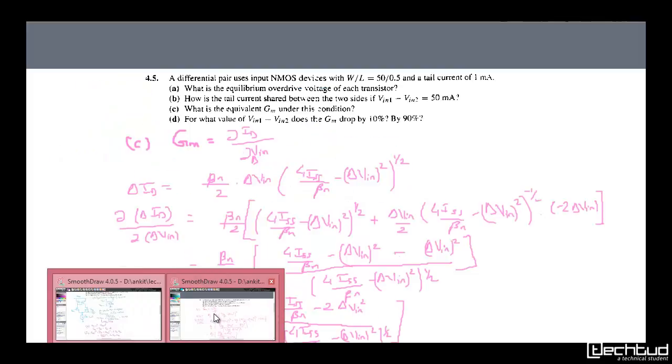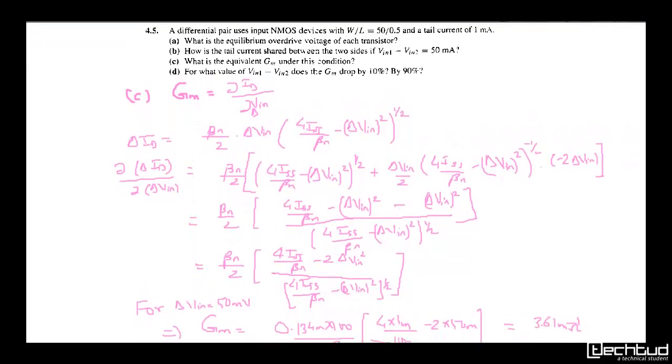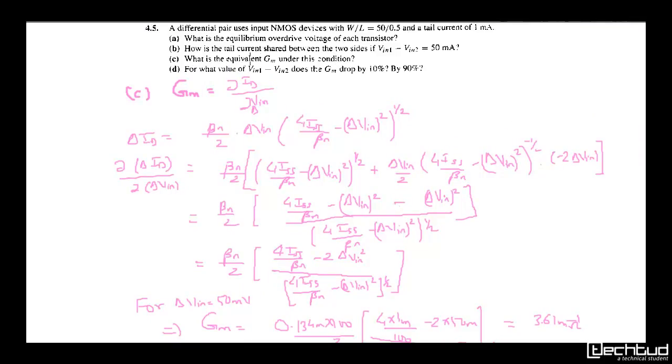Now the third part: What is the equivalent gm under this condition? The definition of transconductance is δID/δVin. From the second part, δID = (β/2)*δVin*sqrt(4*ISS/β - δVin²). When we differentiate using the product rule, we get the first term times the derivative of the second, plus the second term times the derivative of the first.